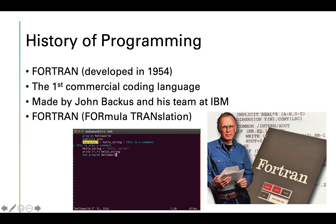Later on, Fortran was developed in 1954 — considered the first commercial coding language. It was made by John Backus and his team at IBM. Fortran stands for Formula Translation. There's a picture of John Backus and a Hello World program in Fortran.